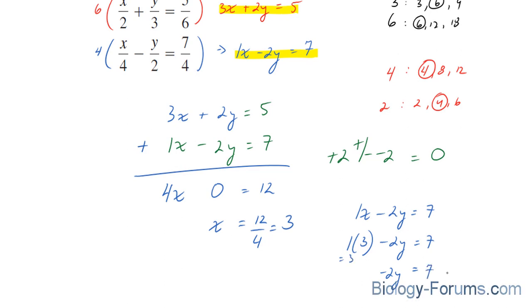By bringing this over, 7 plus 3 becomes minus 3. We end up with 4, negative 2y. We solve for y here by dividing both sides by negative 2, and we end up with negative 2.